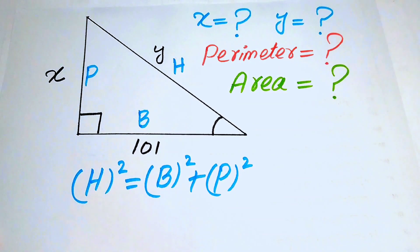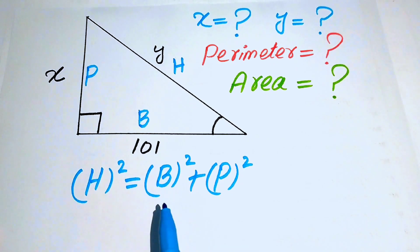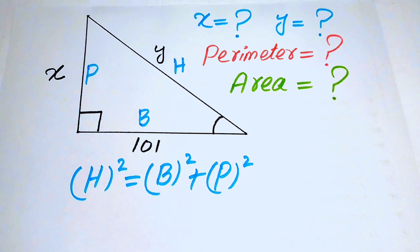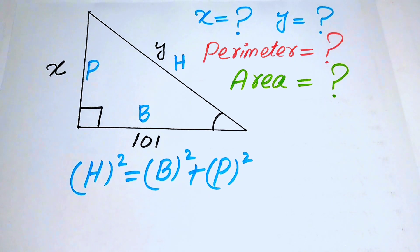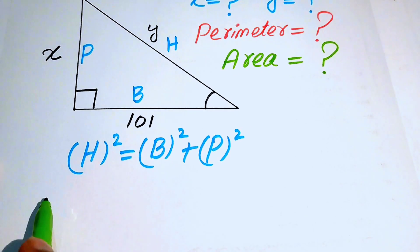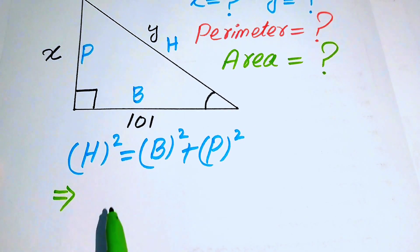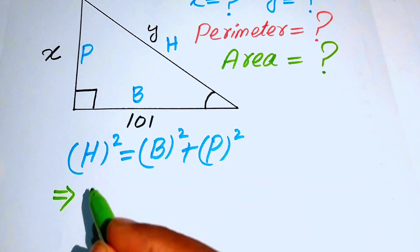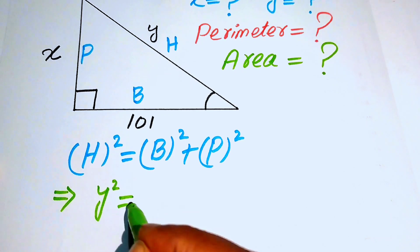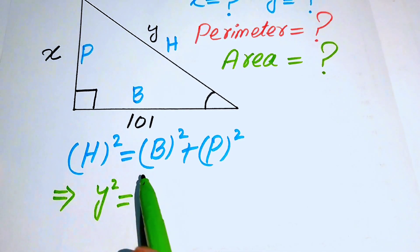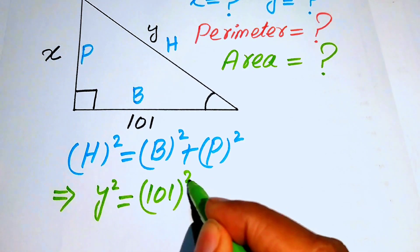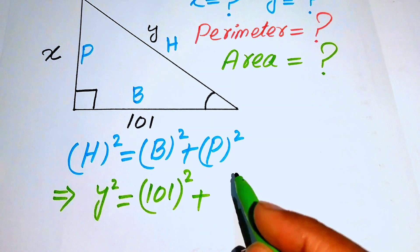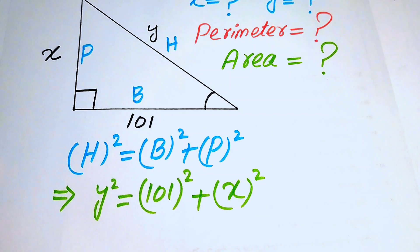According to the Pythagorean theorem: hypotenuse² = base² + perpendicular². We substitute our values: the hypotenuse is y, the base is 101, and the perpendicular is x. So we get y² = 101² + x².